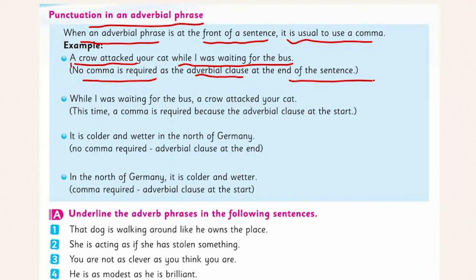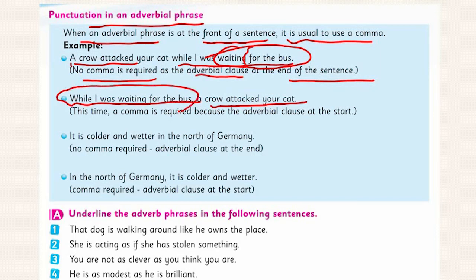'For the bus' — 'waiting for the bus' is your adverbial phrase. You don't need to put a comma there. However, if your adverbial phrase is at the front of the sentence, we put a comma. For example: 'While I was waiting for the bus, a crow attacked your cat.' 'While I was waiting for the bus' is your adverbial phrase, and we put a comma after it.